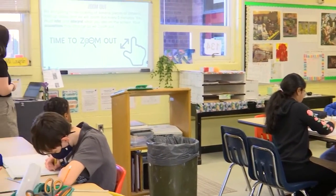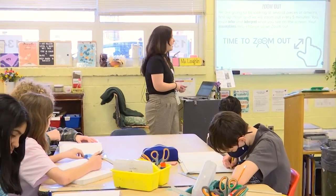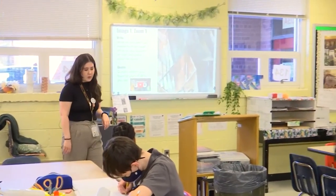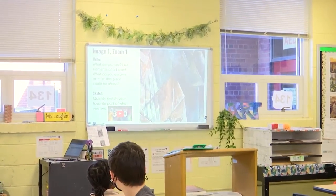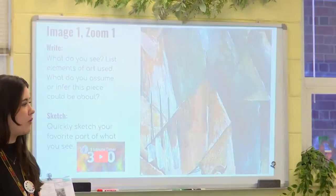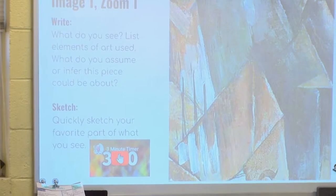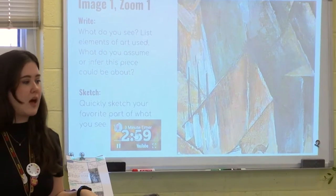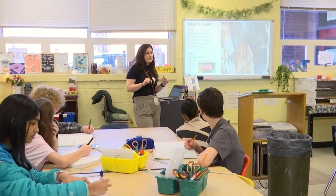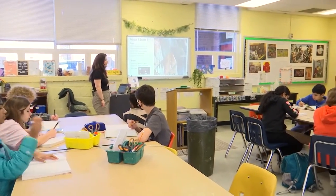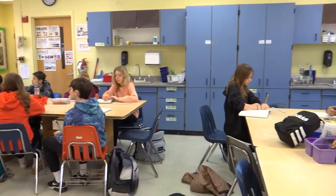To make a guess about what it means — and then our assumptions may change as we zoom out, so you'll be able to see more, which might make you change your mind. So for our very first image, this is zoom one. Where you wrote zoom one on your notes, you're going to write down first: what do you see? List the elements of art used — they're listed over there if you need a refresher. What do you assume or infer this piece is about? I'm going to give you all three minutes. For half of that time, I want you to silently write to yourself, and then you're going to talk with your table. Write exactly what you see — what colors, what shapes, what elements, what do you think it could be.